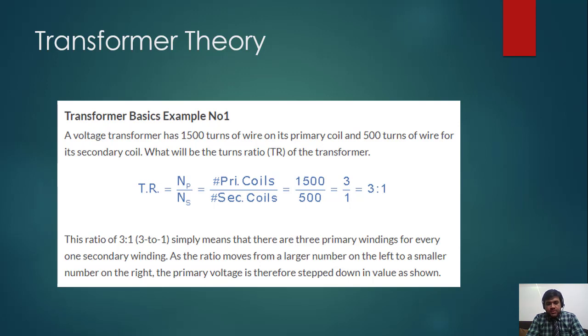This ratio of transformer 3 to 1 simply means that there are three primary windings for every one secondary winding. As the ratio moves from a larger number on the left to a smaller number on the right, the primary voltage is therefore stepped down in value as shown.